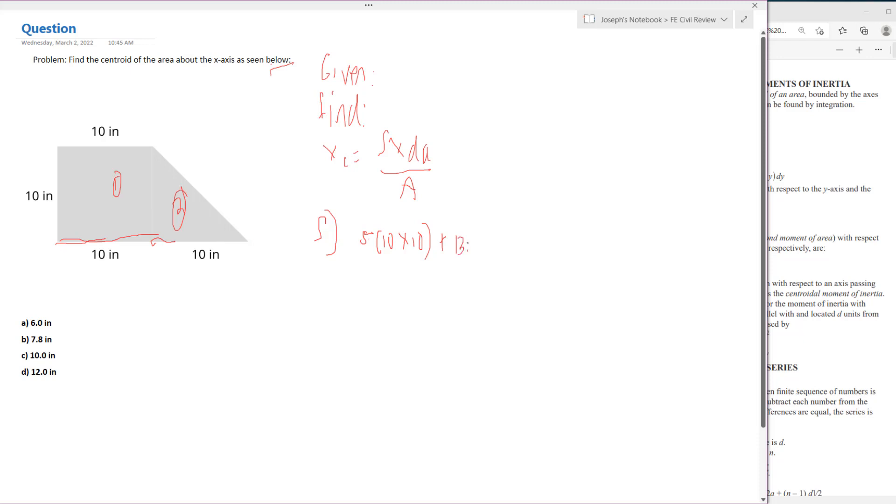Multiply that by the area of this triangle. We know the area of a triangle is one-half base times height. The base is 10 and the height is 10 in this case, so that's going to be the top part of our equation.